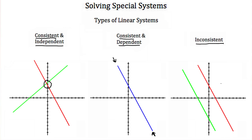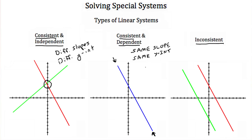There are some important things to recognize in these types of systems. A consistent and independent system means our two equations have different slopes and different y-intercepts. Consistent and dependent systems have the same slope and the same y-intercepts. Knowing that, we can use information about slopes and y-intercepts to classify our systems.